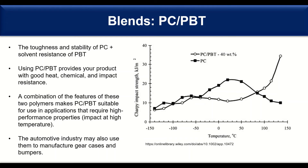Another example is PC-PBT. Here we can use the toughness and stability of polycarbonate, and by blending with PBT we get solvent resistance. Polycarbonate has a downside in chemical resistance, but by mixing with PBT this can be addressed. You create a product with good heat resistance, good chemical and impact resistance, making it suitable for automotive applications where both chemical and impact resistance are needed. Here is an example showing that the impact behavior at higher temperature can be improved with such a blend, together with the solvent resistance.